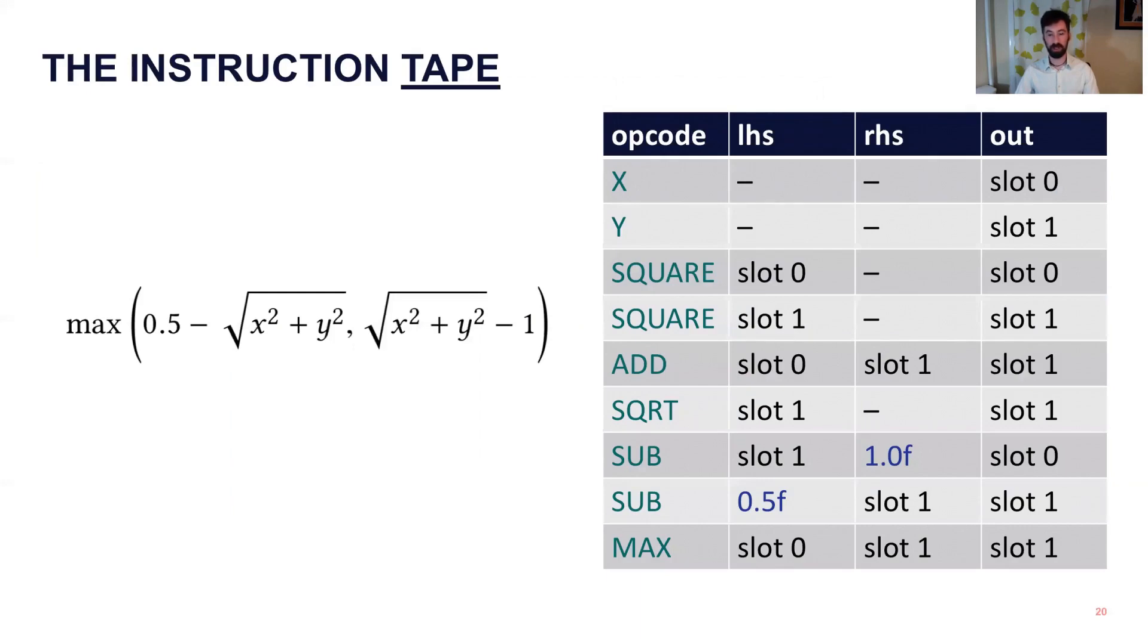The way we do this is we build what we call an instruction tape from an equation. So you can imagine that the interpreter is basically a for loop which iterates over each of these lines. It takes the opcode and evaluates it, reading arguments and writing to an output slot. Slots are the VM equivalent of registers. I'm just using the word to avoid confusion. So some things take immediates, some things take slots, but if you run through this you'll end up with an output value, which is your shape at the given X and Y position.